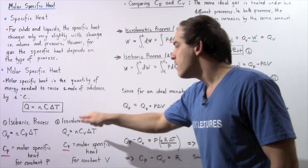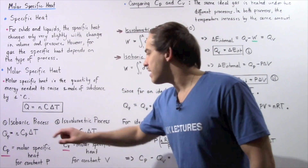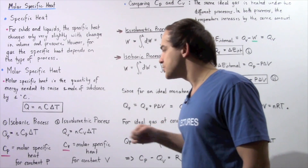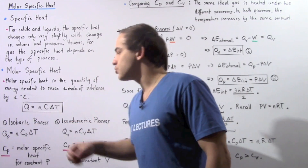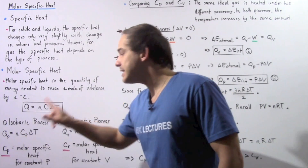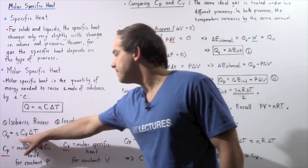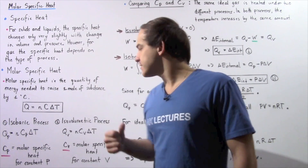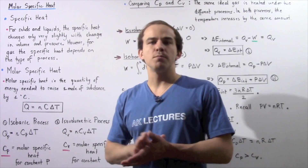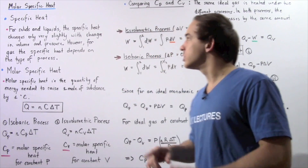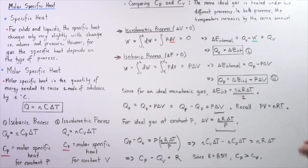Cv is the molar-specific heat for an isovolumetric process in which the volume remains constant. So if the number of moles is the same and the change in temperature is the same, then whichever of these quantities is greater implies that the amount of energy transferred is also greater. For example, if Cp is greater than Cv, then Qp will be greater than Qv. Let's compare the values of Cp and Cv and try to determine which one is greater.